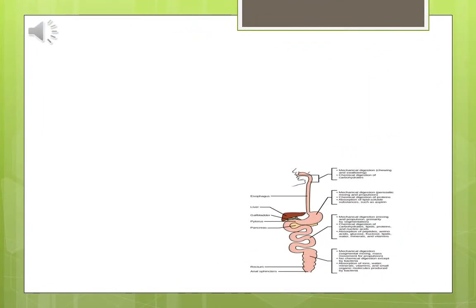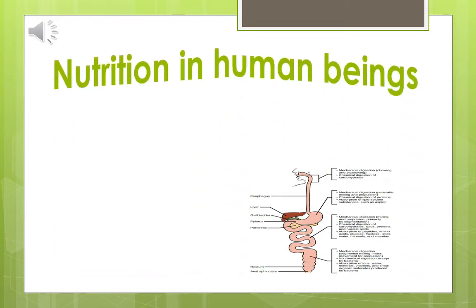The human digestive system is very complex in nature. Let us observe the figure of the digestive system. From the figure we observe that the alimentary canal, also known as the gut, is basically a long tube extending from mouth to anus.